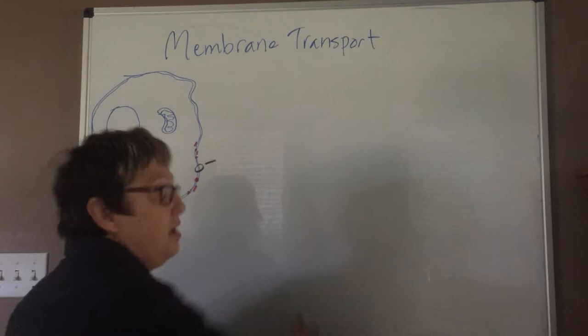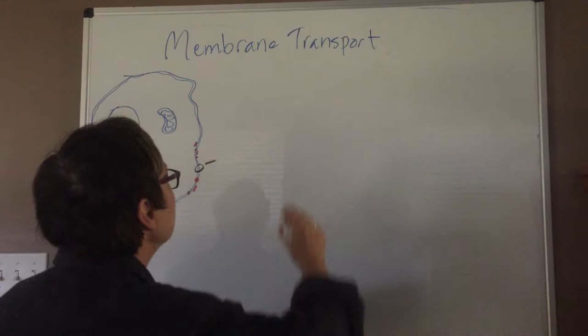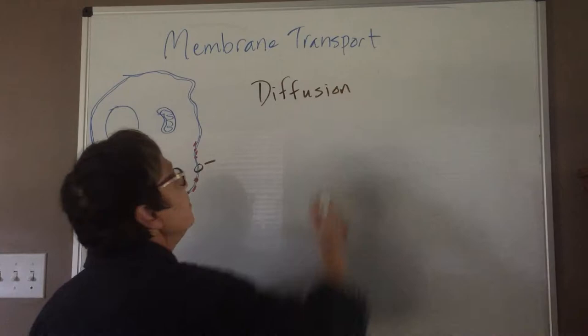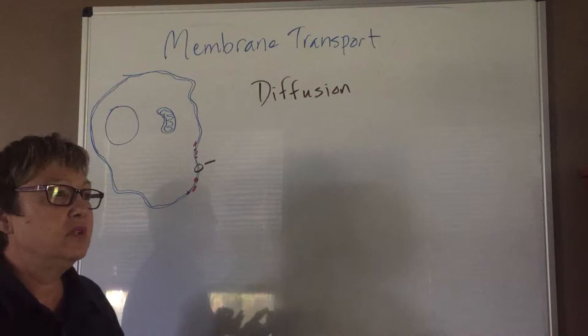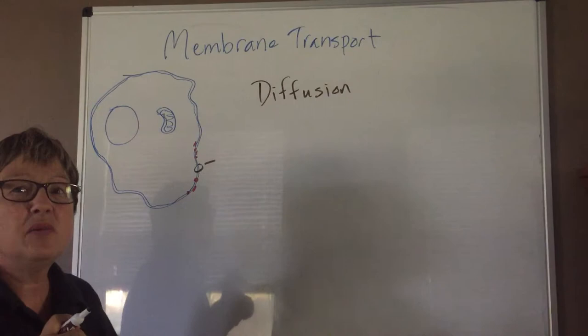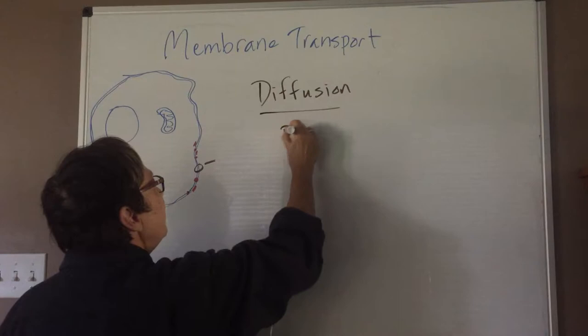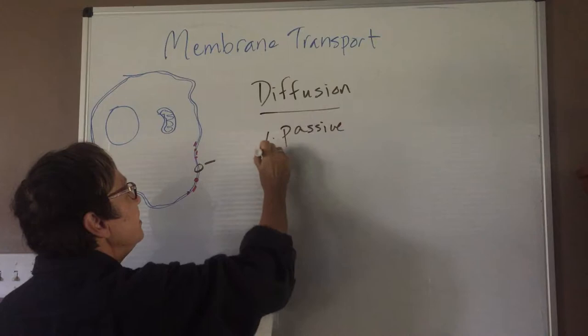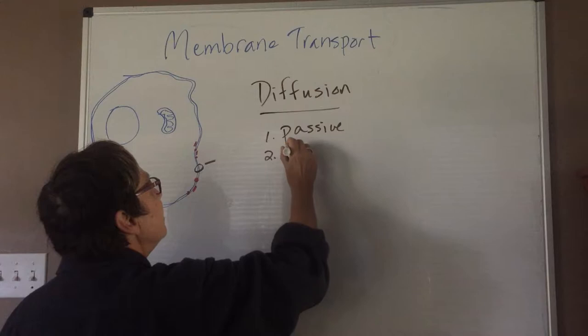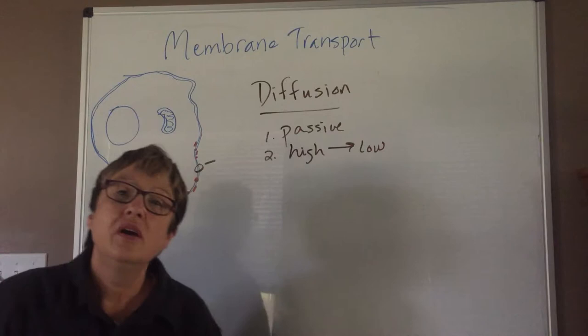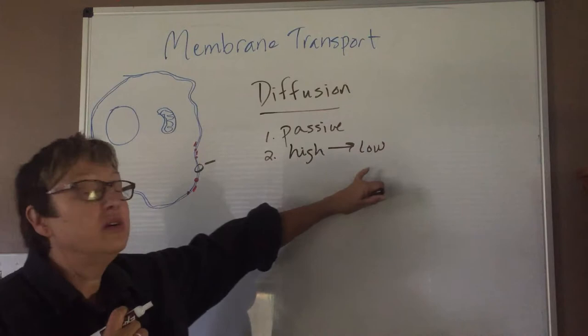So the first type of membrane transport that I want to discuss is diffusion. Diffusion occurs in all sorts of locations, but we're going to talk about diffusion across the cell membrane. Diffusion is a passive form of transport. It doesn't require any energy. It is a form of transport in which substances move from an area where they're in high concentration to an area where they're in lower concentration. Diffusion is movement from high to low.